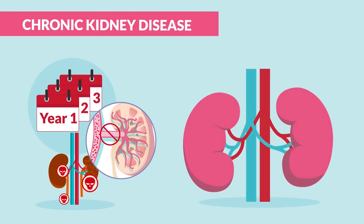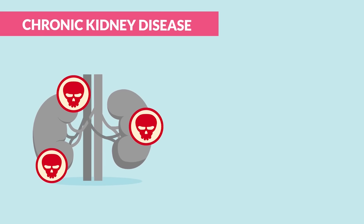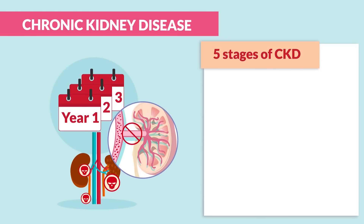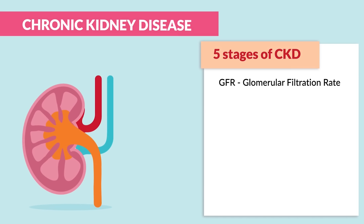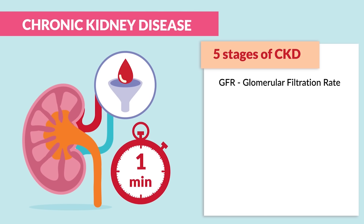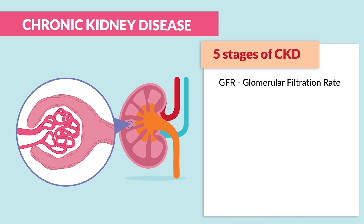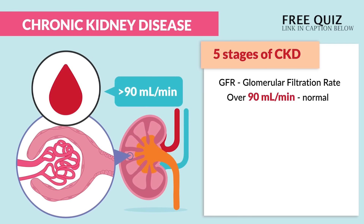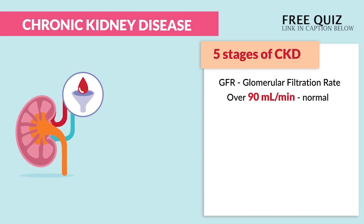Switching gears to chronic kidney disease — this is a gradual loss of kidney function going in stages, kind of like shirt sizes going from extra small to extra extra large. We have five stages of CKD based on the GFR, the glomerular filtration rate, stating how much blood can be washed by the kidneys each minute, specifically inside these little washing machine bubbles called the glomerulus. Over 90 mLs per minute is considered normal. As the GFR gets less and less, the kidneys are in distress.